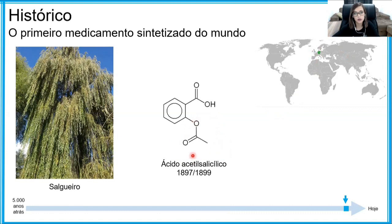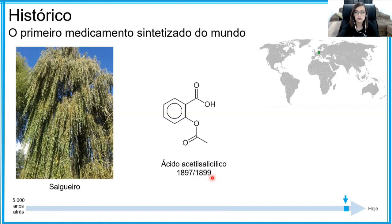Ele modificou um pouquinho a estrutura do ácido salicílico e chegou nessa formulação. A primeira vez que sintetizou o ácido acetilsalicílico foi em 1897. Em 1899, a Bayer colocou o medicamento à base do acetilsalicílico no mercado e patenteou, dando o nome de aspirina — essa aspirina que a gente encontra na farmácia até hoje para dores de cabeça. A aspirina foi considerada inovadora não só por ser um dos primeiros medicamentos a ir para o mercado, mas por ser o primeiro com comprimidos de dosagem padronizada.